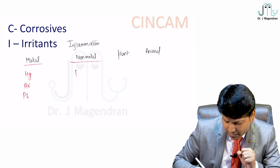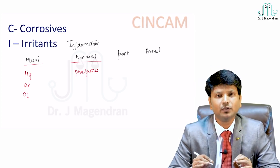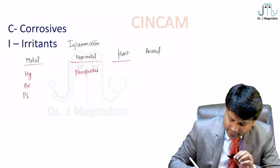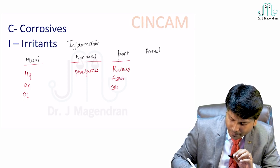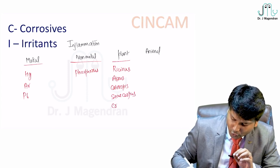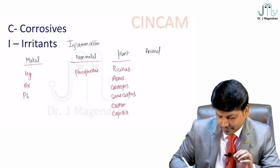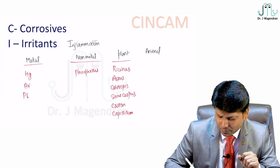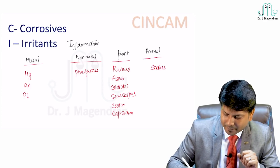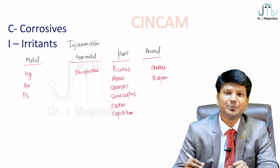Animal irritants include snakes, scorpions, honeybees, centipedes, and spiders. The third important group is neurotoxic. When we say neurotoxic, the poison can act on the brain (cerebral poison), on the spinal cord (spinal poison), or on the peripheral nerves (peripheral nerve poison). Cerebral poisons can either stimulate the brain — deliriants — or depress it — somniferous poisons — or cause intoxication — inebriants.